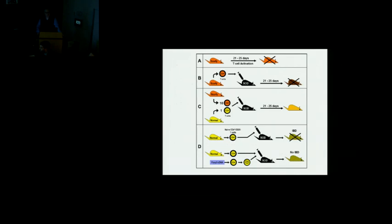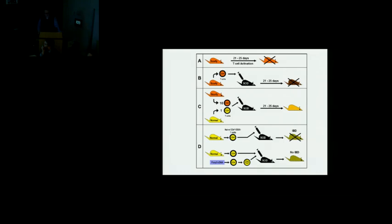We've known about this disease in an animal model even longer than in humans. The scurfy mouse arose from a spontaneous mutation in a non-irradiated colony at Oak Ridge National Laboratories in the 1950s — also X-linked inheritance, causing a severe wasting disorder. The mice were born normal, then developed diarrhea, wasting, and a scruffy, flaky skin inflammation so severe that the tips of their ears and tails fell off. They died by about three weeks of age of an overwhelming lymphoproliferative autoimmune phenotype.